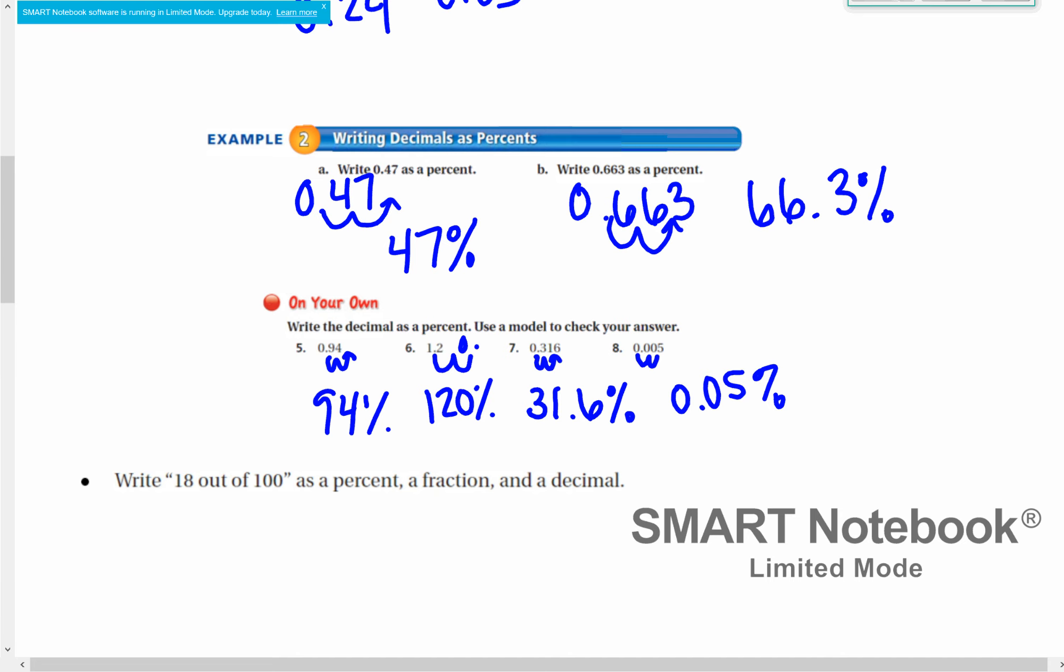The last thing I'm going to talk about for this lesson is writing it as a fraction as well. We know percent is always out of 100. So to write 0.47 as a percent would be 47%, and as a fraction would be 47 out of 100. That can't be simplified, so we would keep it there.